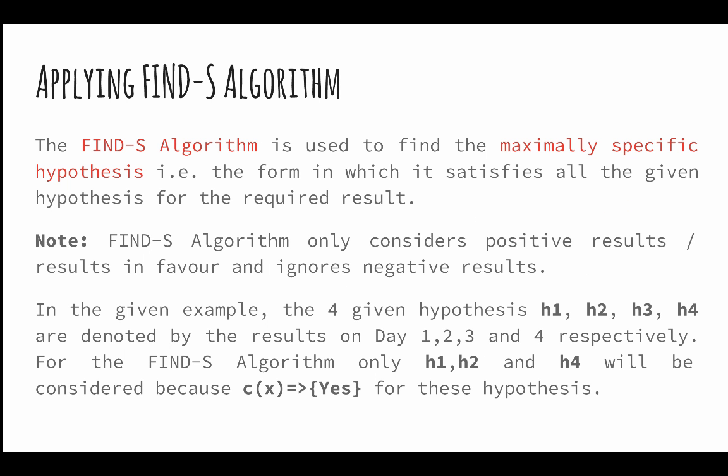One way to achieve this task is to use the Find-S algorithm, which is used to find the maximally specific hypothesis. This algorithm only considers the positive results of the EnjoySport function. Hence, among the four listed hypotheses H1, H2, H3, and H4, as shown in the previous table, only three hypotheses are used to obtain the result of this algorithm.